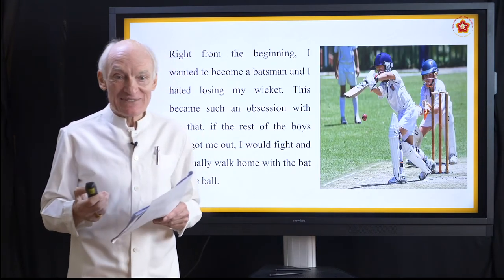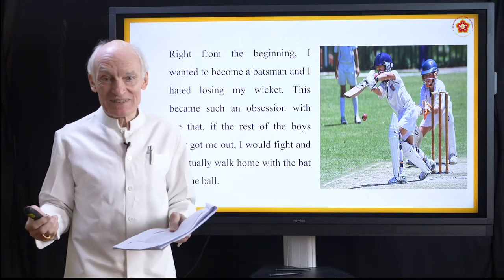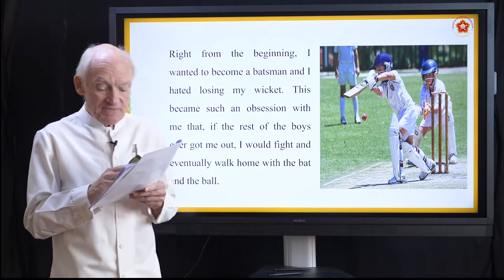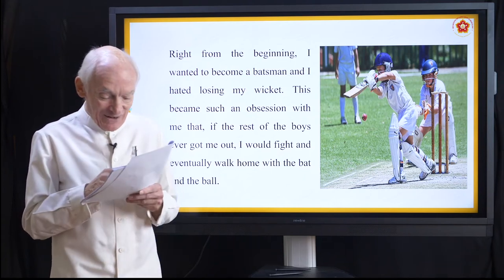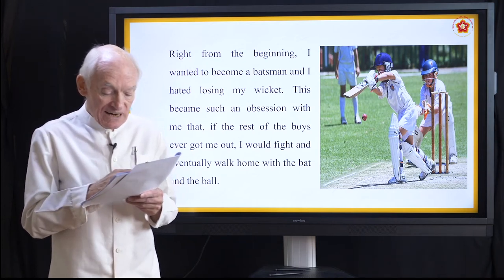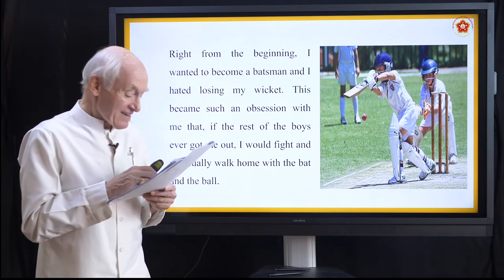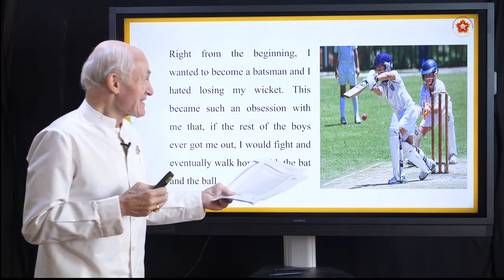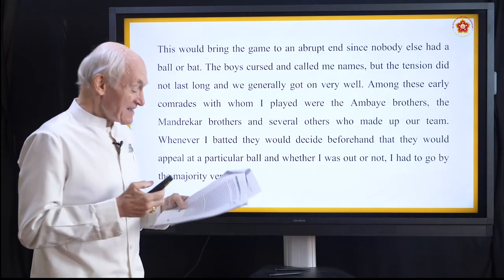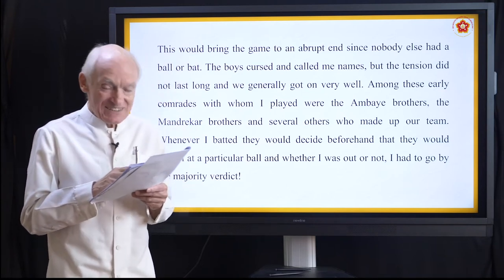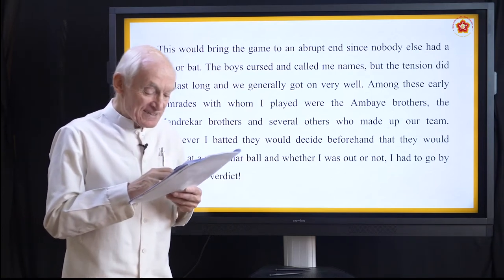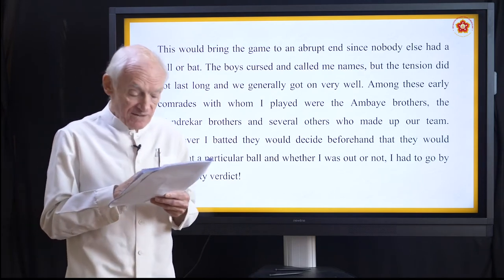He even dared to ask his uncle if he could have one, since the uncle had so many. His uncle told him: 'You have to sweat it out and earn the Indian colors. You have to work hard to earn that distinction.' That was a lesson he has never forgotten. 'I am glad my uncle did not succumb to my childish fancy and instead taught me there was no shortcut to the top.' He was also fascinated by the many souvenirs and trophies his uncle had won — most of all, the stump bearing the autographs of the 1952 India and England teams. He loved to linger over every player's autograph. Right from the beginning, he wanted to be a batsman and hated to lose his wicket. It became such an obsession that if the other boys ever got him out, he would fight and walk home with the bat and ball, bringing the game to an abrupt halt.